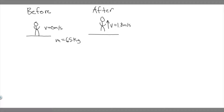In this problem, we're told a 65 kilogram basketball player jumps vertically and leaves the floor with a velocity of 1.8 meters per second upward. Part A: what impulse does the player experience? Part B: what force does the floor exert on the player before the jump? And Part C: what is the total average force exerted by the floor on the player if the player is in contact with the floor for 0.45 seconds during the jump?